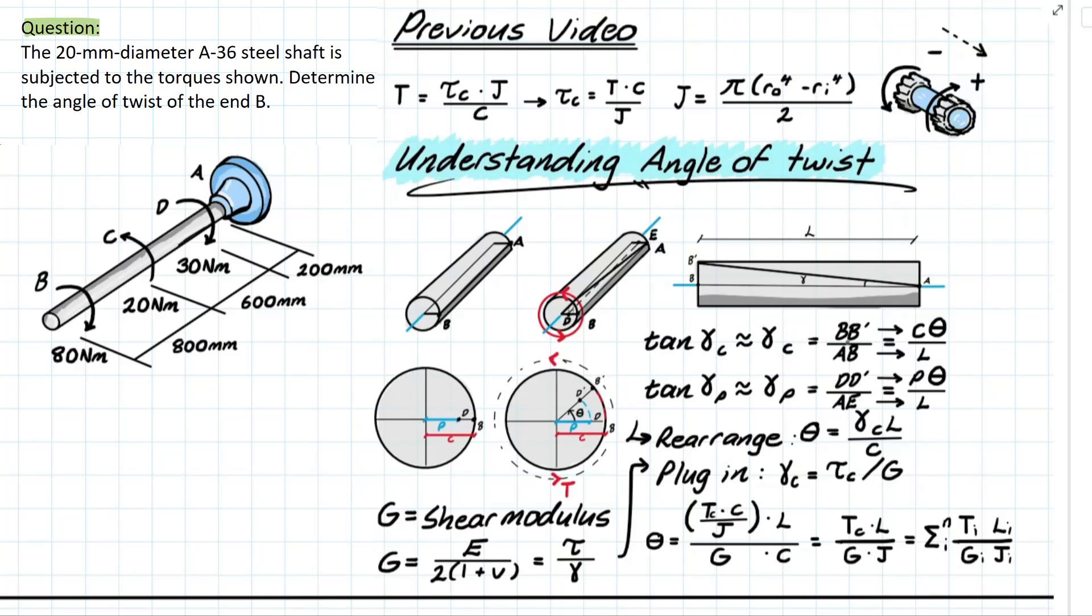And now that's out of the way we can actually start replacing these annotated lengths for variables that we can actually solve for or find. Now the first one is going to be ab which is pretty simple. It's simply just the length of our entire member. So we're replacing that with l.